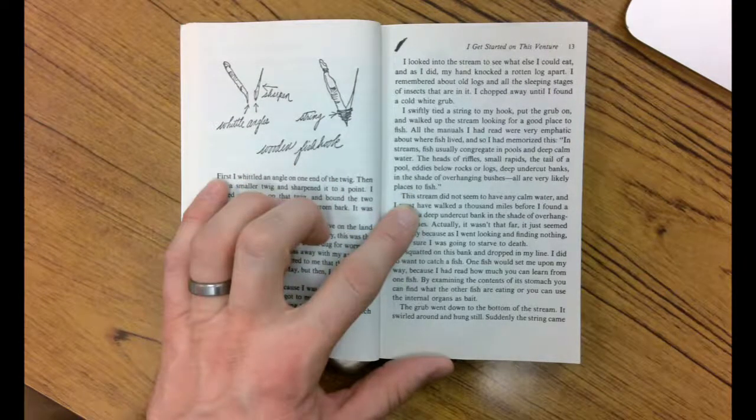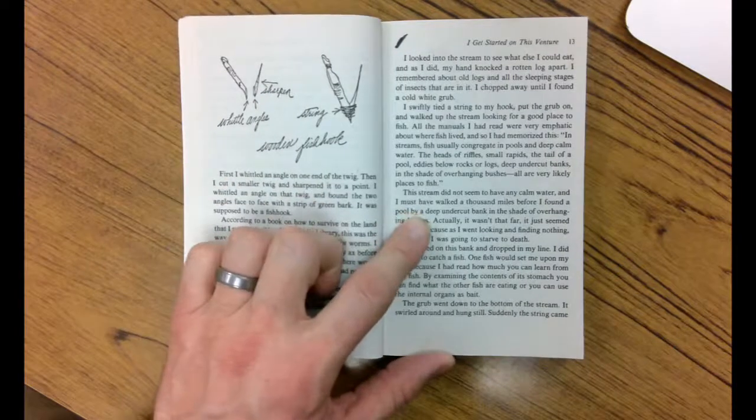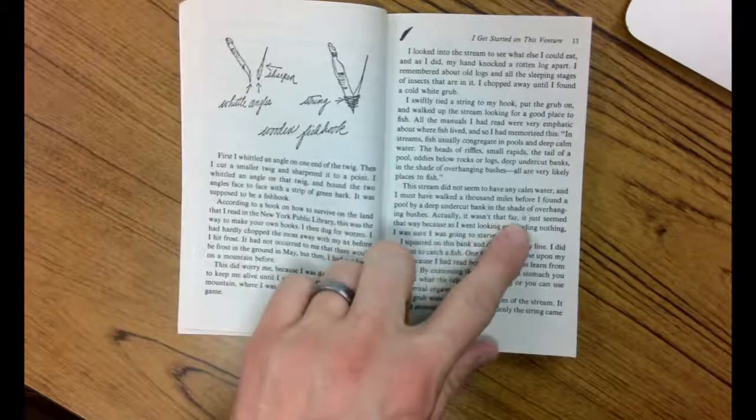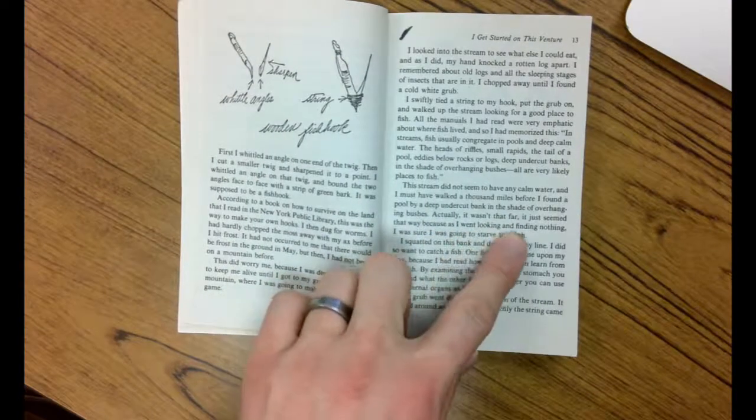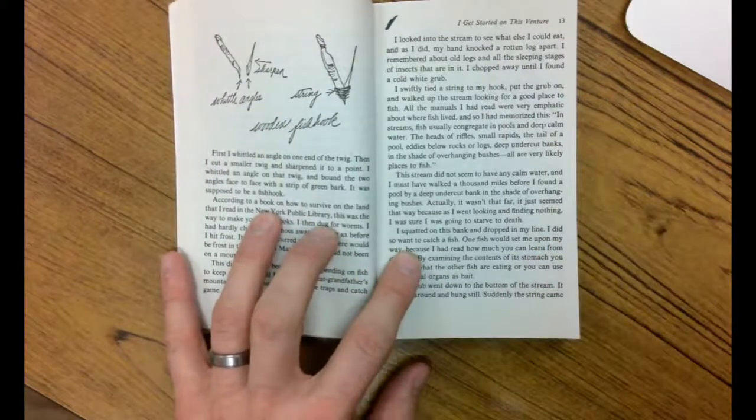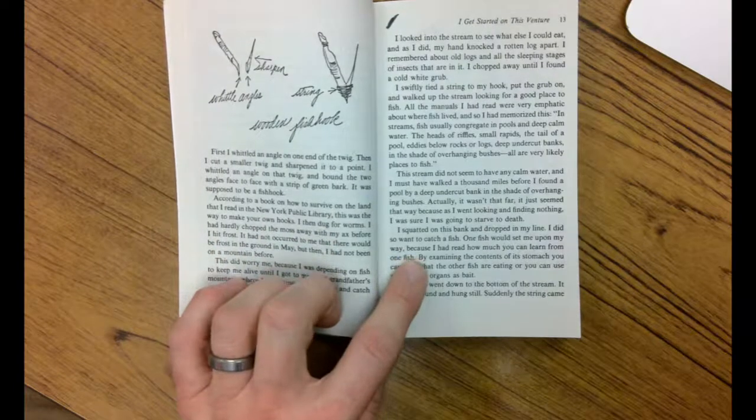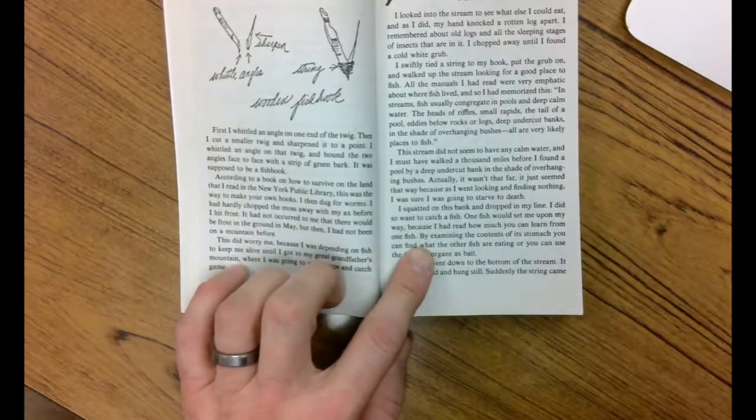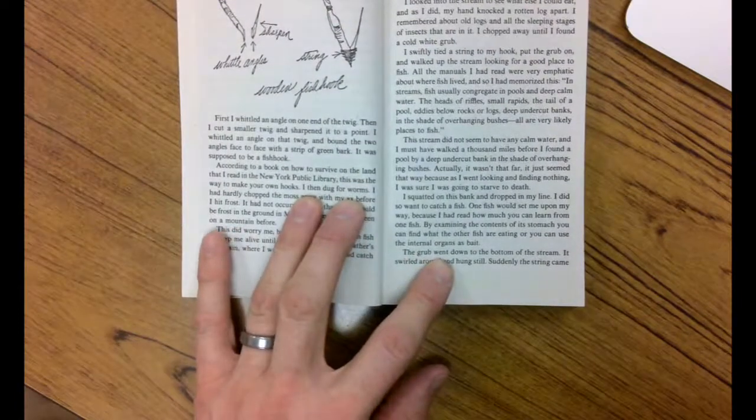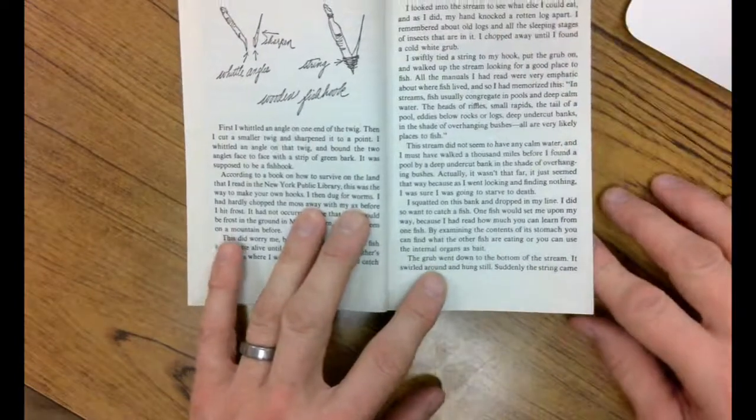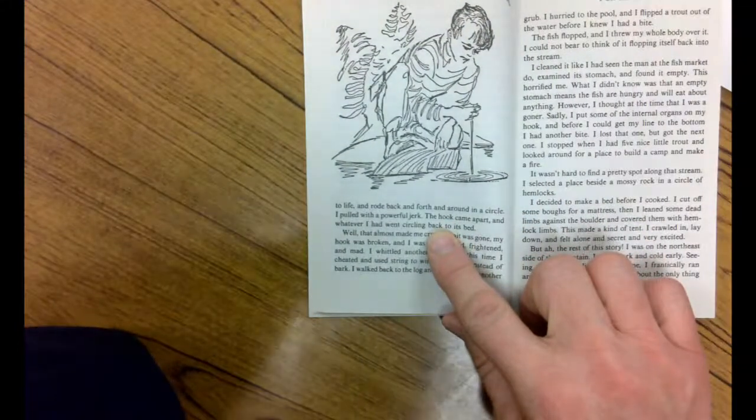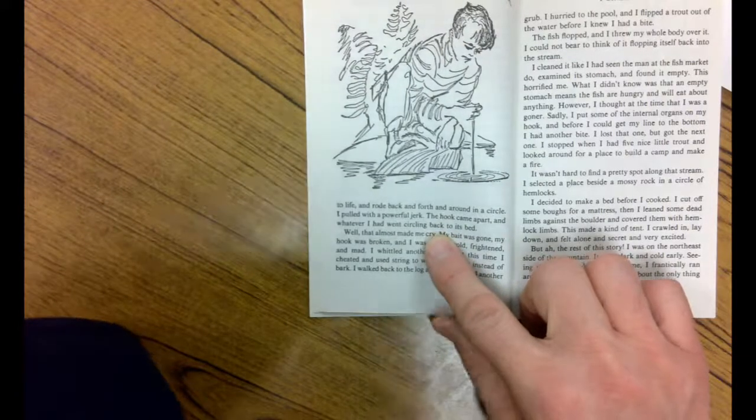This stream did not seem to have any calm water, and I must have walked a thousand miles before I found the pool by a deep undercut bank with the shade of an overhanging bush. Now a thousand miles, he's exaggerating. Actually, it wasn't that far. It just seemed that way because I went looking and finding nothing. I was sure I was going to starve to death. I squatted on the bank and dropped in my line. I did so want to catch a fish. One fish would set me upon my way because I had read how much you can learn from one fish. By examining the contents of its stomach, you can find what the other fish are eating or you can use the internal organs as bait. The grub went down to the bottom of the stream. It swirled around and hung still. Suddenly, the string came to life and rode back and forth and around in a circle. I pulled with a powerful jerk. The hook came apart. Whatever I had went circling back to its bed. So his little hook that he made broke.